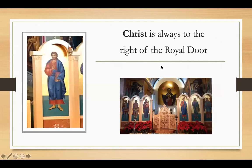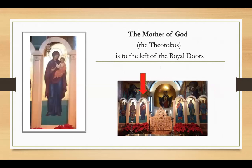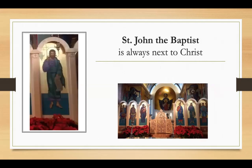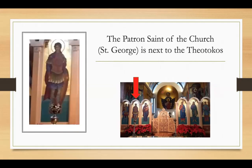Most churches have the same pattern. The icon of Christ is always to the right of the central door — the royal doors. The Mother of God, the Theotokos, is to the left of the royal doors. St. John the Baptist is always next to Christ. The patron saint of the church — in our case, St. George — is next to the Theotokos.